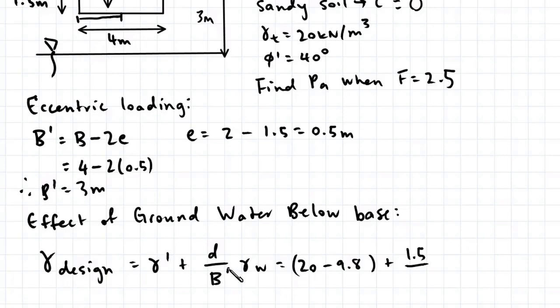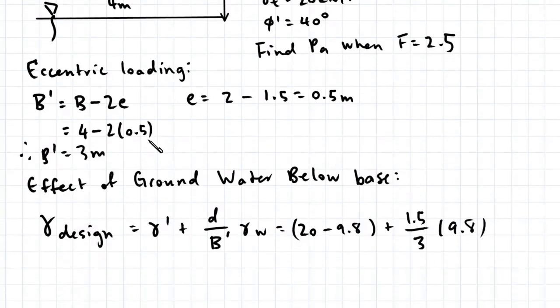Sorry, this should be effective width. So that's 3 meters multiplied by the unit weight of water, 9.8. So this gives us a gamma design of 15.1 kilonewtons per cubic meter.